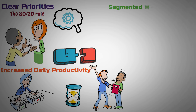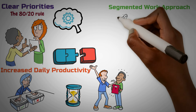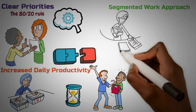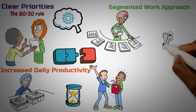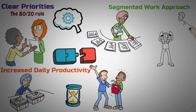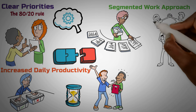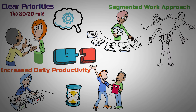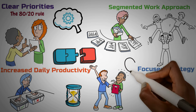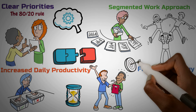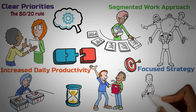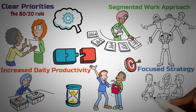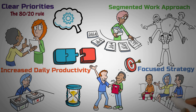Sixth, a segmented work approach: the Pareto Principle encourages breaking down work into manageable segments, allowing individuals and teams to tackle complex tasks more effectively. By focusing on the critical few tasks that drive the majority of outcomes, teams can avoid becoming overwhelmed and maintain momentum. Seventh, focused strategy: by applying the Pareto Principle, teams can develop a more focused and strategic approach to goal achievement, optimizing resource allocation and ensuring energy is directed toward activities that yield the highest returns.